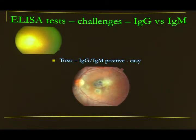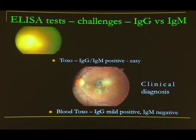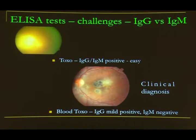When you have a scar and a reactivation next to it, that is a clinical diagnosis of toxoplasmosis even if blood Toxo IgG is mildly positive and IgM is negative. You don't need to doubt the diagnosis because IgM is negative. When it is an atypical necrotizing retinitis and Toxo IgM and IgG are positive, it is very helpful. But the clinical diagnosis remains most important.